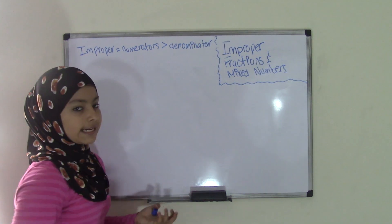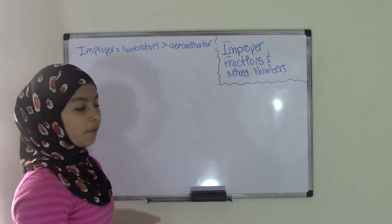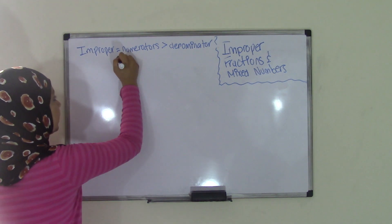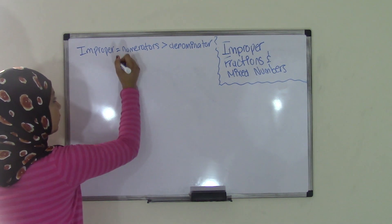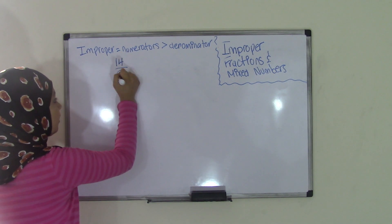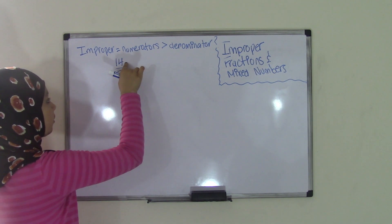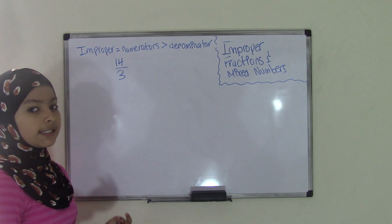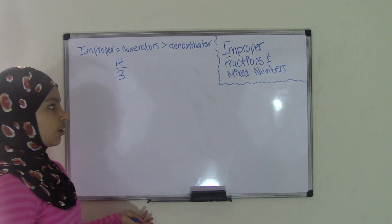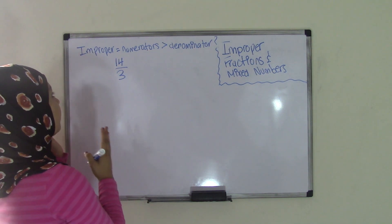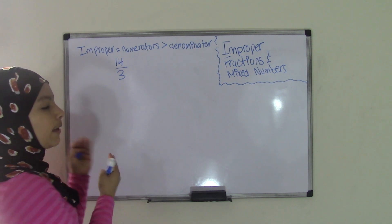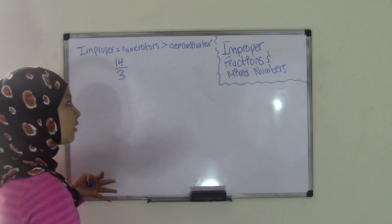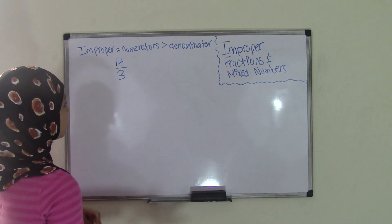An example of an improper fraction could be 14 over 3, because the numerator is greater than the denominator. That makes it an improper fraction — remember the prefix 'im' means 'not', so improper fraction means not a proper fraction.